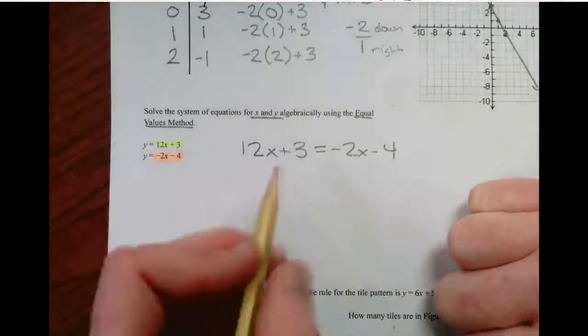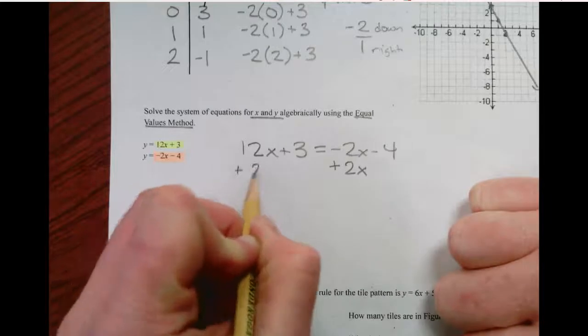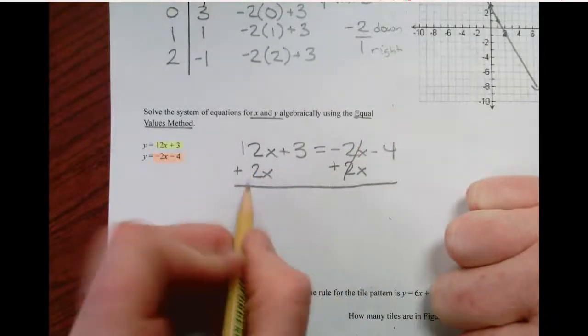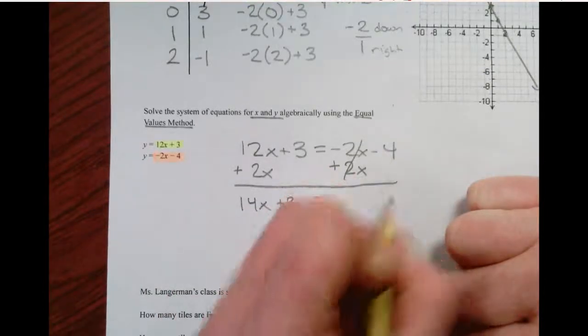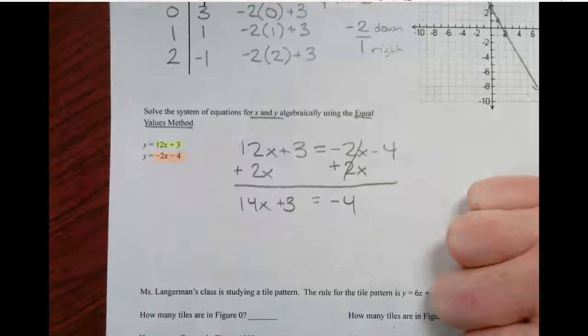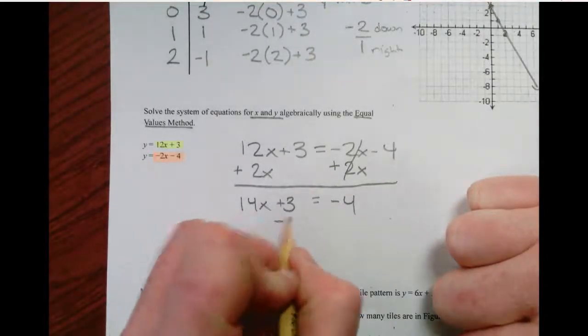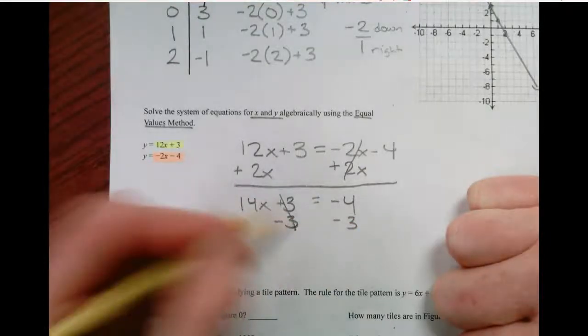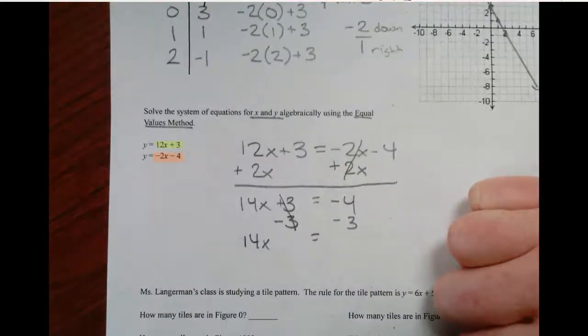Okay, now we solve. I'm going to get x on one side. Add 2x. 14x plus 3. There is negative 4 over here. Now I need to get rid of this 3. So we're going to subtract 3.